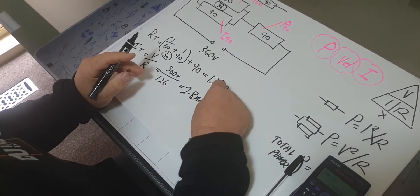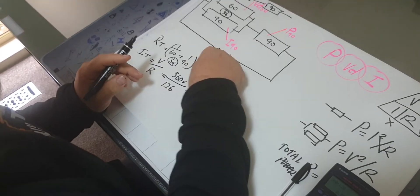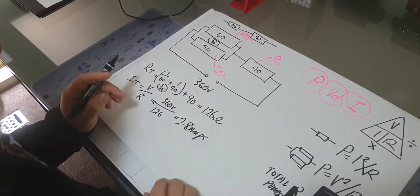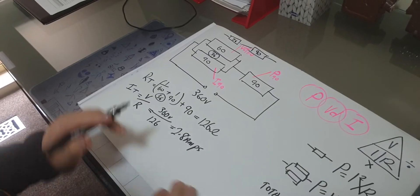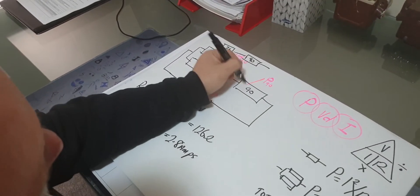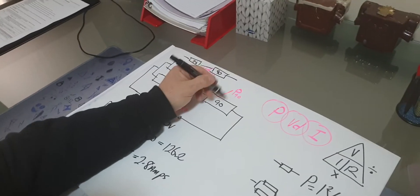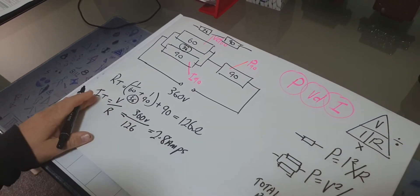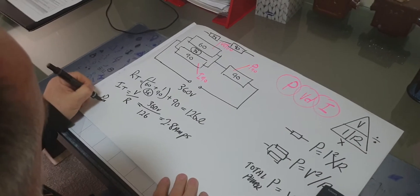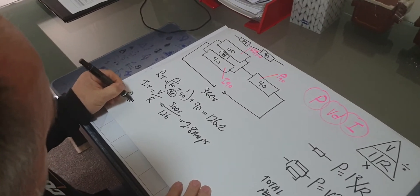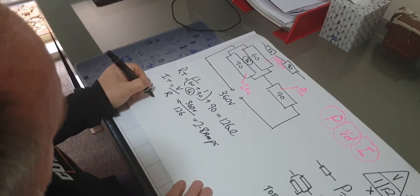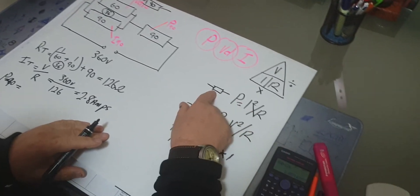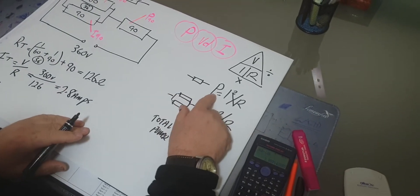Once I've got resistance total, current total, and voltage, I can do whatever I need to break the circuit down. The first thing I'm going to look at is the power for this resistor — specifically P for the 90-ohm resistor.